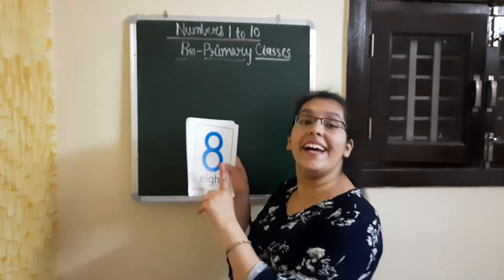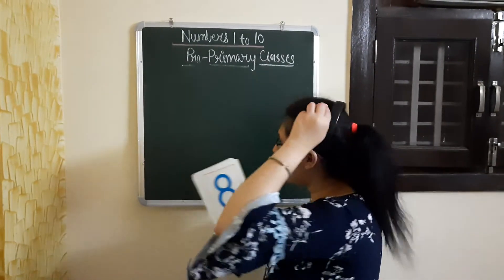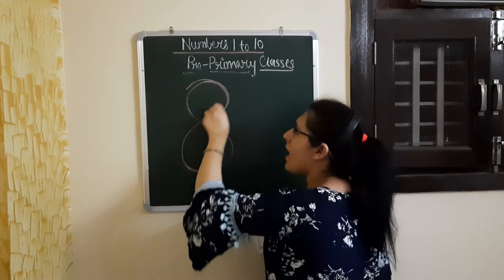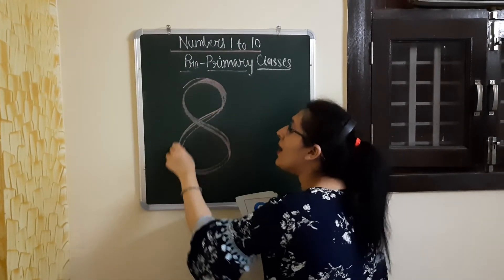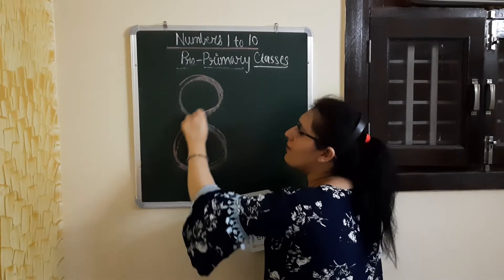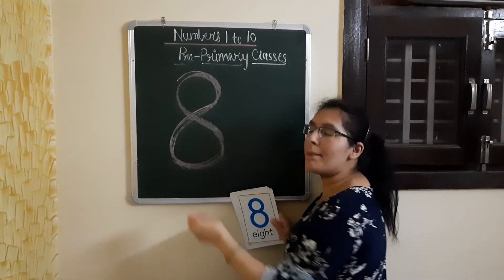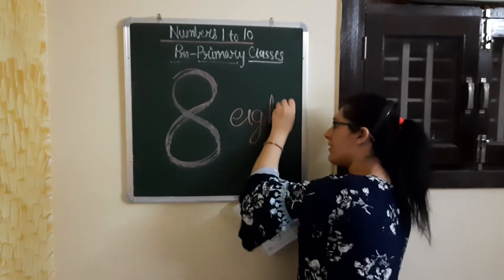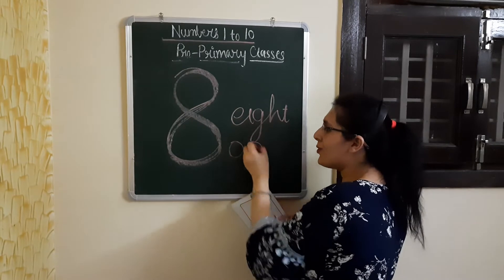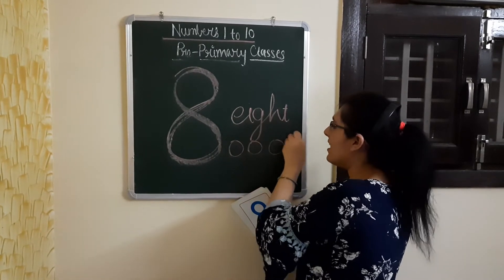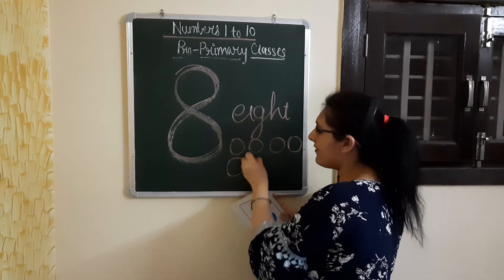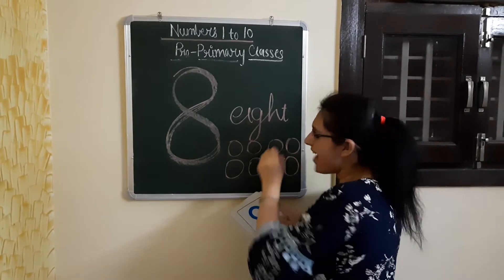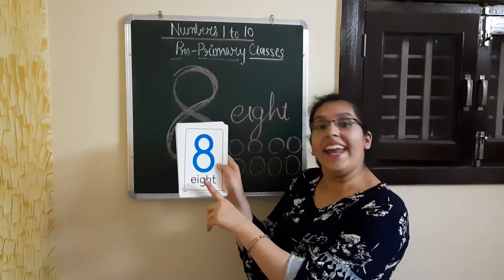Now comes number 8. So let us make it: round and round and round we go. Round and round and round we go. This makes number 8. 1, 2, 3, 4, 5, 6, 7 and 8. This makes number 8.